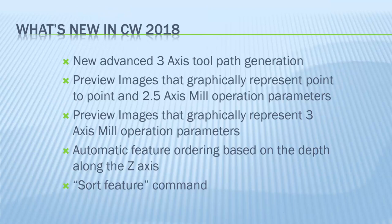What's new in CAMWorks 2018? CAMWorks 2018 has many major enhancements and also many more small enhancements, but we are just going to focus on the most significant changes compared to previous versions. The first major change is that CAMWorks comes with a new 3-axis generator for 3-axis toolpath generation, which will greatly improve the quality of the 3-axis toolpath generator.